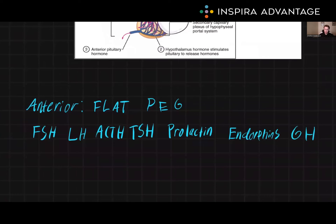A way to keep all of these hormones straight is the acronym FLATPEG. The F in FLAT stands for FSH, or follicle-stimulating hormone. The L stands for luteinizing hormone, or LH.